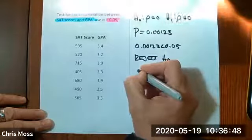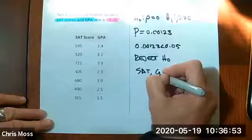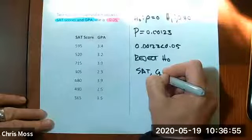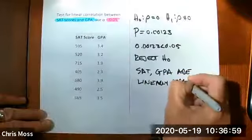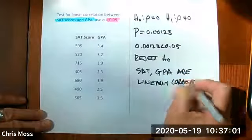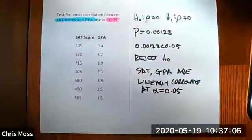SAT and GPA are linearly correlated. At, and then I'll list the alpha, 0.05, and we're done.